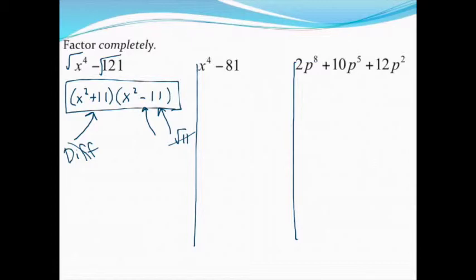Compare that to this next example because at first glance it looks very similar, but watch the subtle difference. Once again it is difference of two squares and there's not a greatest common factor. I'm going to take the square root of x to the fourth and 81. The square root of x to the fourth is x squared, and the square root of 81 is nine. One is plus and one is minus.